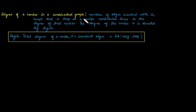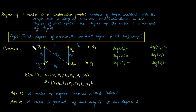Next is the degree of a vertex in an undirected graph. It is calculated as the number of edges incident with that vertex, plus the loop at that vertex is contributed as twice. So in general, the degree of a vertex is equal to the number of incident edges plus two times the self-loop.